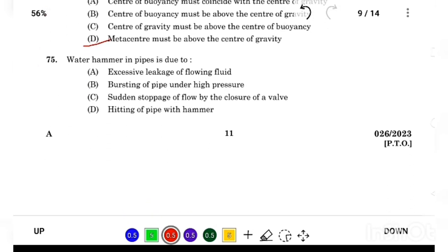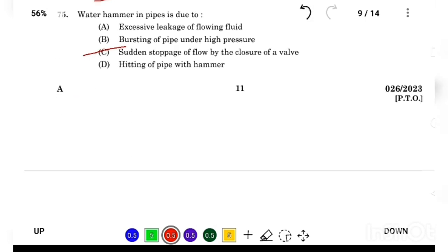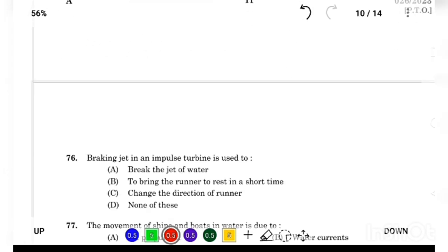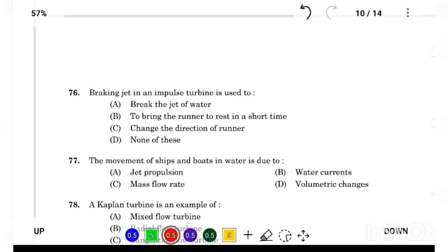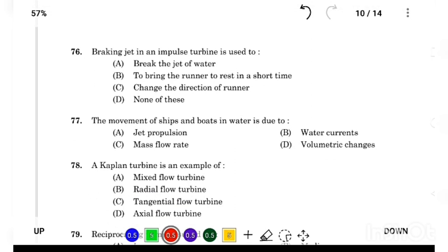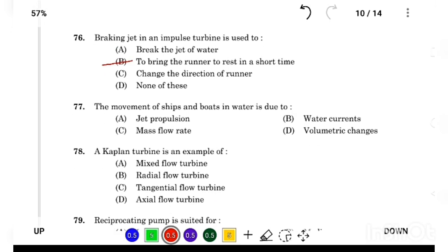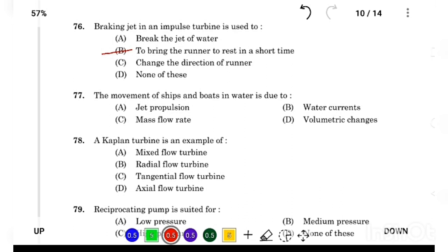Water hammer in pipe is due to Answer Option C, sudden stoppage of flow by the closure of a valve. Breaking jet in an impulse turbine is used to Answer Option B, to bring the runner to rest in short time. The movement of ships and boats in water is due to Answer Option A, jet propulsion.